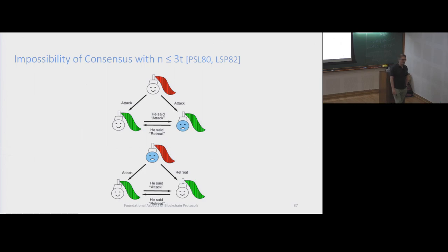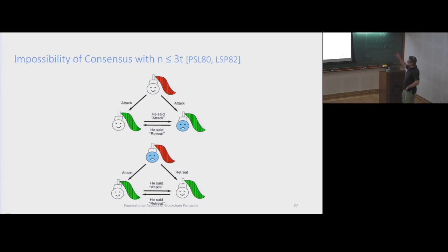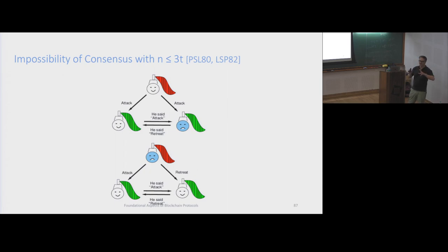Here is a sketch of the impossibility result presented in the original paper, showing that you cannot achieve broadcast with less than or equal to a third. The scenario has a sender and two receivers. In the first scenario, the sender is honest and the blue face is corrupt - the sender sends the same message to everybody, but the corrupt party is there. They are communicating by sending messages to each other without crypto, so there are no signatures.